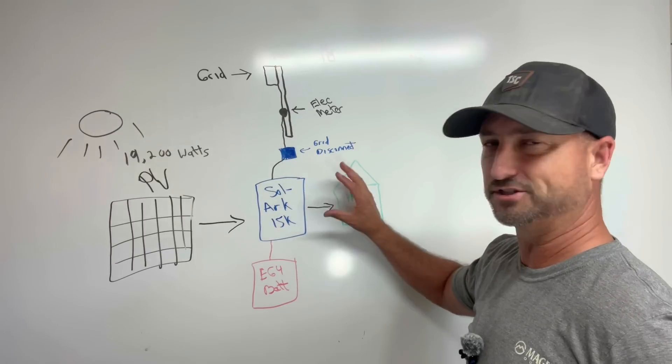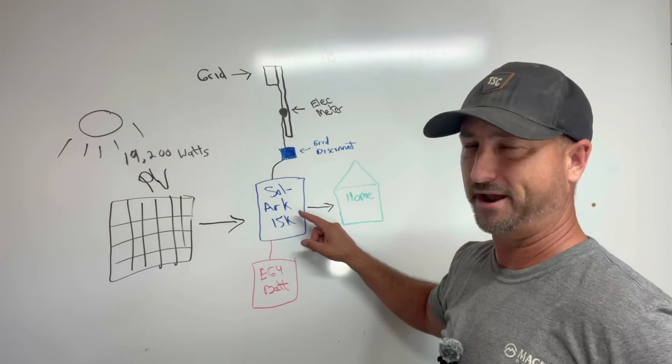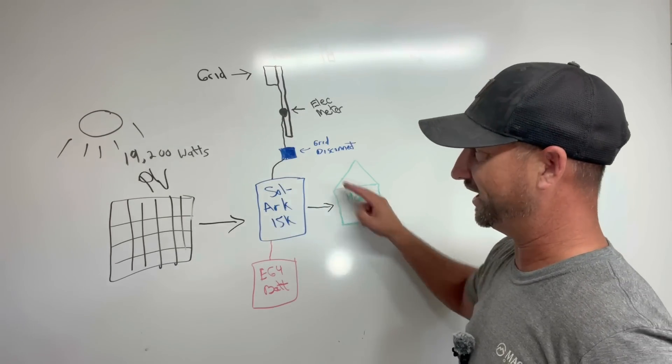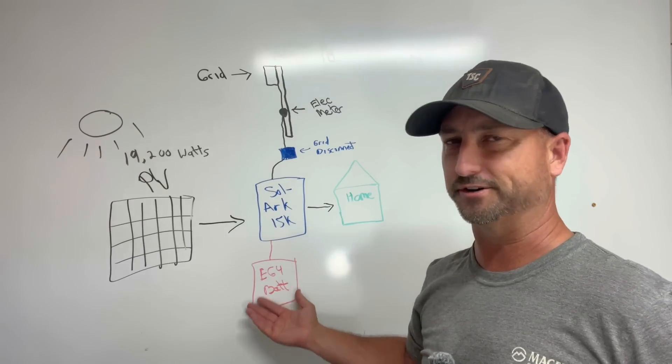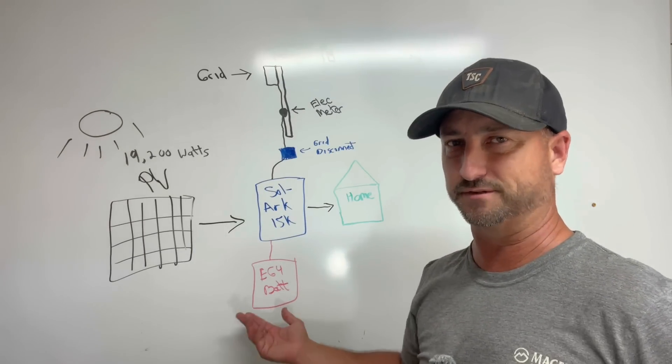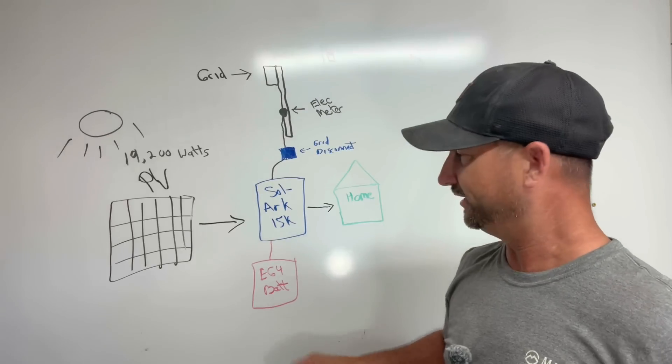Most people's systems they don't do that because the Solark has a 200 amp pass-through where you can send 200 amps through from the grid. So I use the grid as backup instead of using the generator as backup since I have the grid. It's the cheapest form of energy so that's the way I do it.